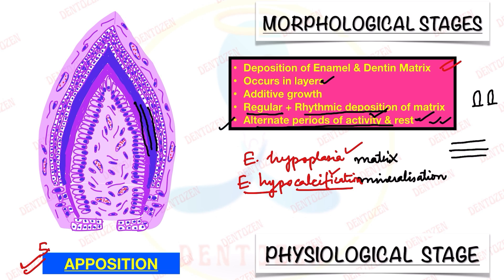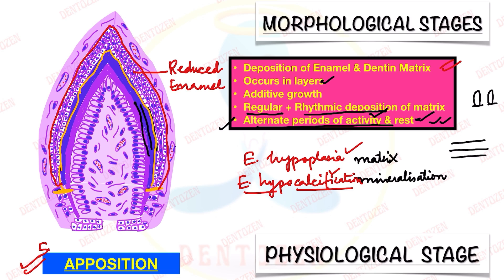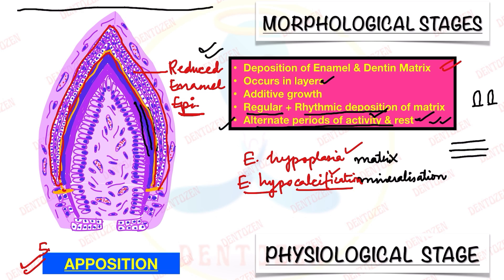An important point related to tooth development: once the hard tissues are formed and the crown is complete, what happens to the enamel organ? It becomes compressed and reduced, its four layers become indistinct and appear as one. This is known as the reduced enamel epithelium. This reduced enamel epithelium remains over the newly formed crown, protecting it until the tooth erupts into the mouth.